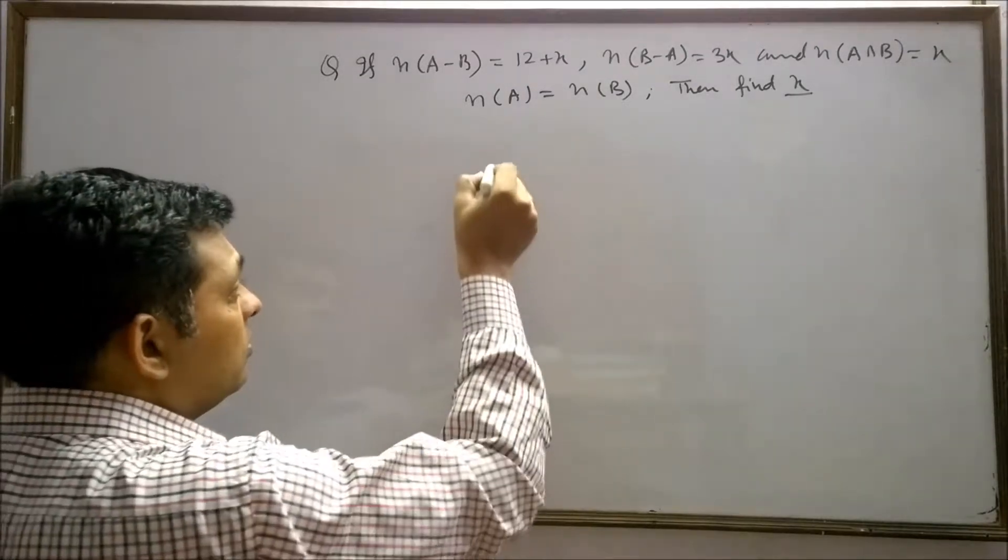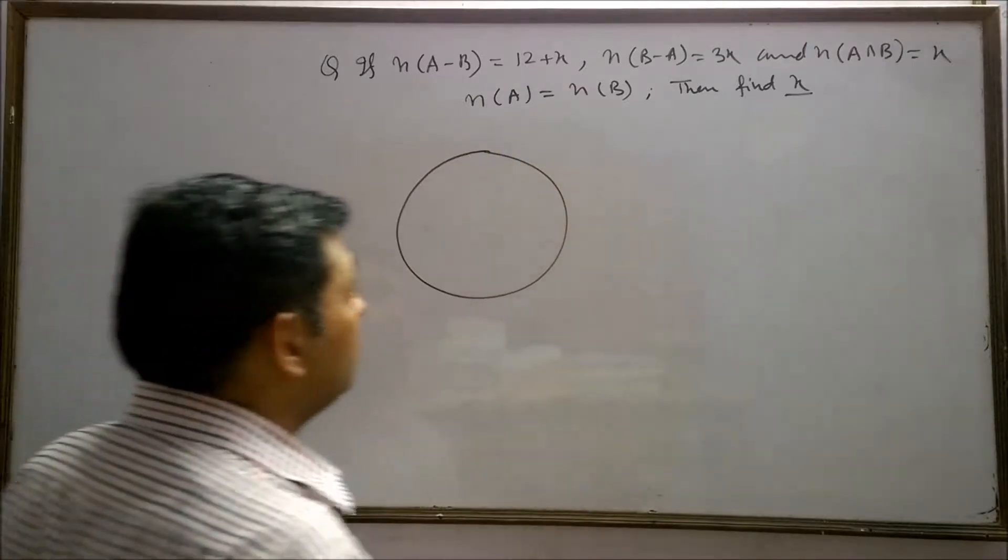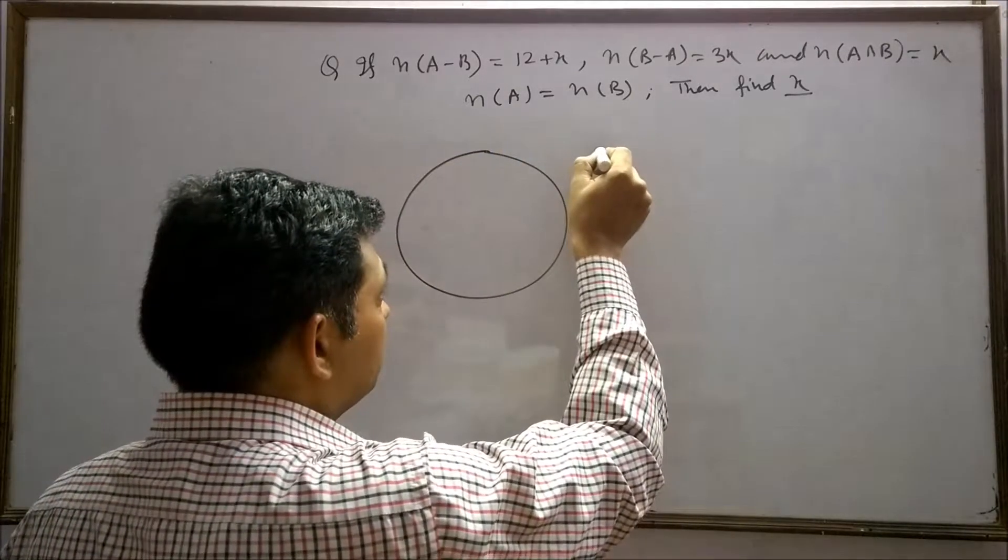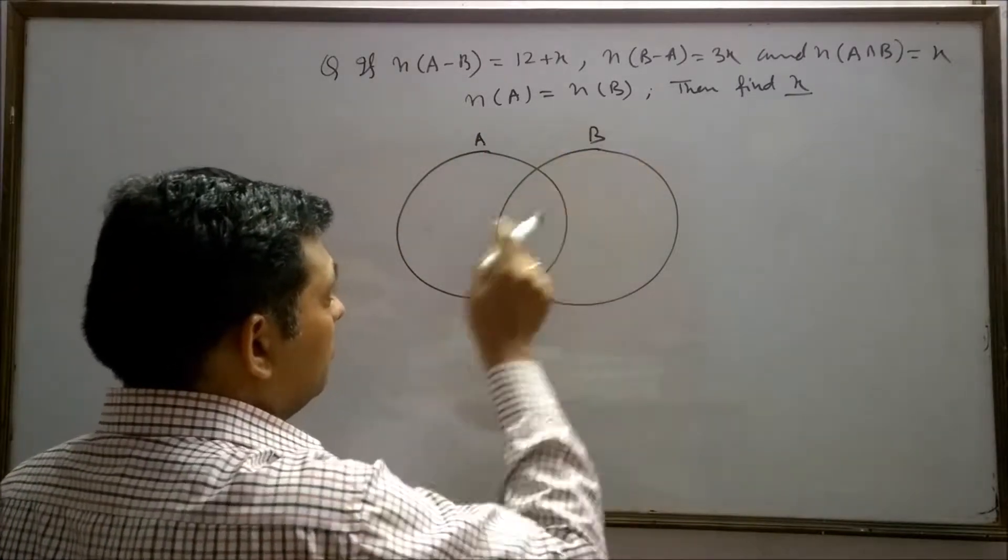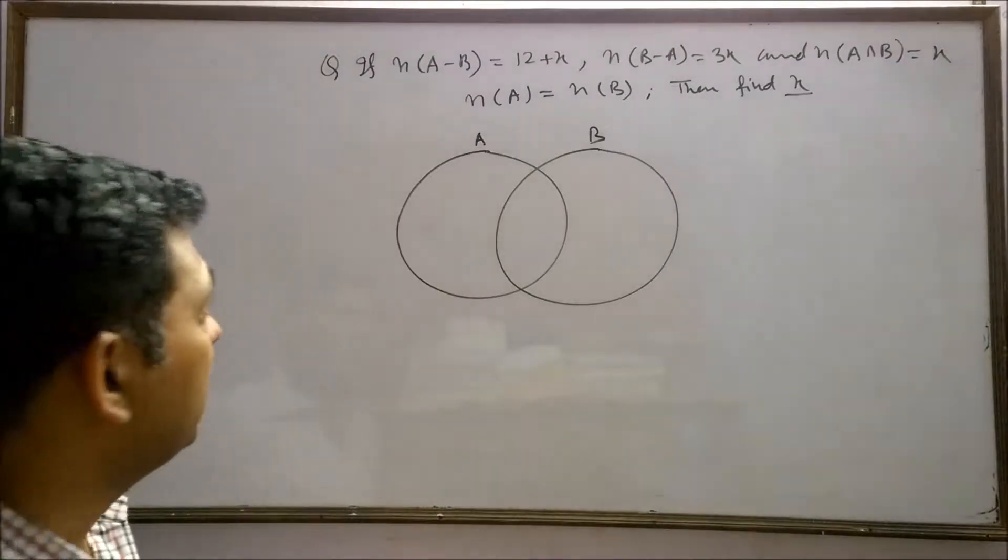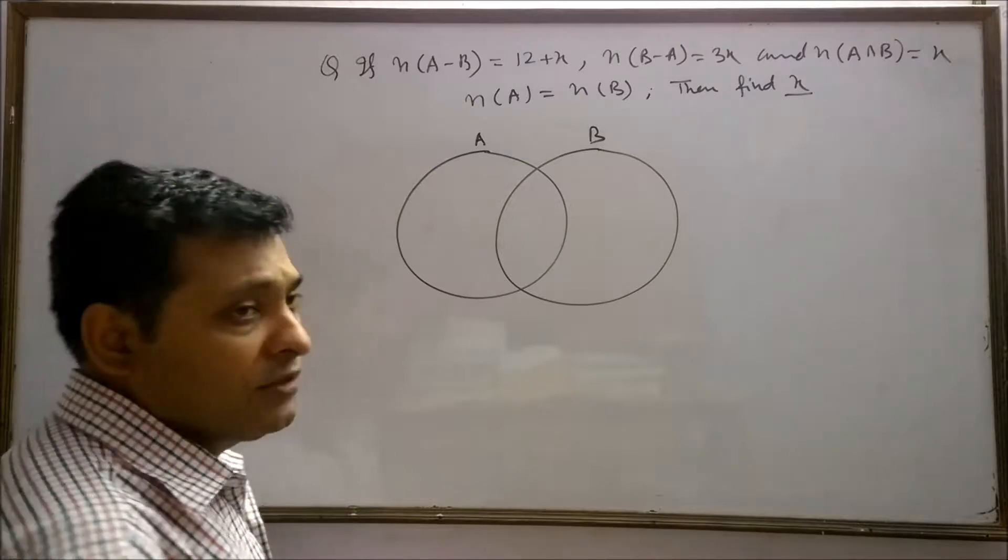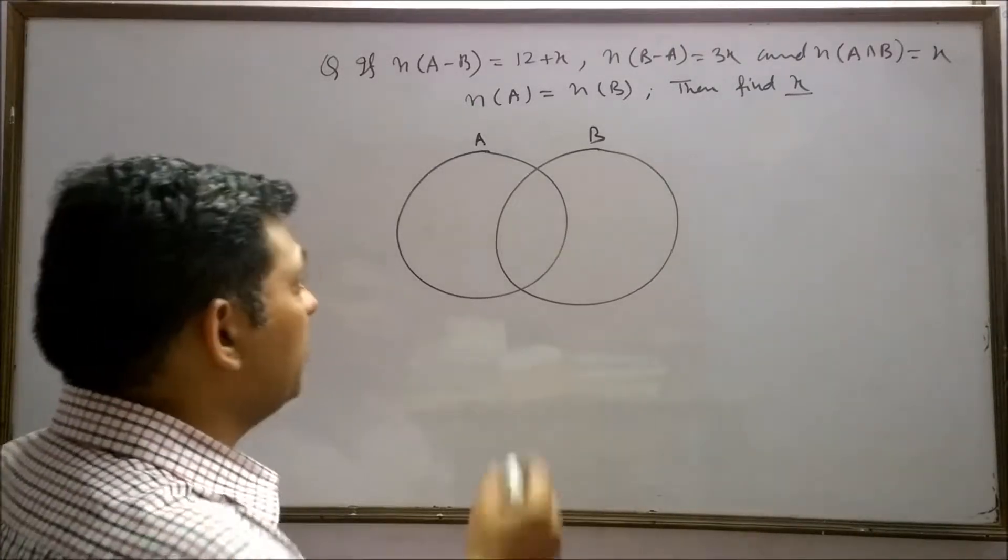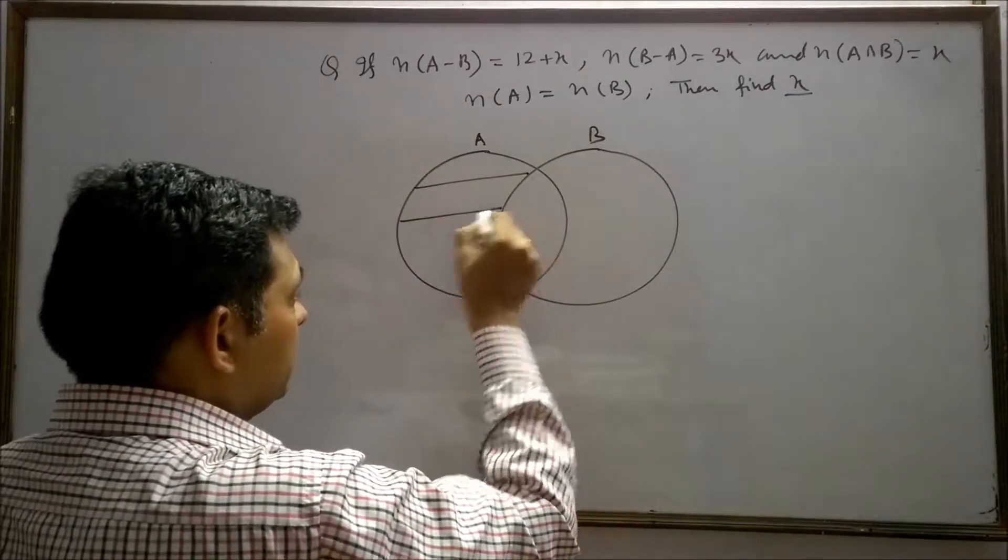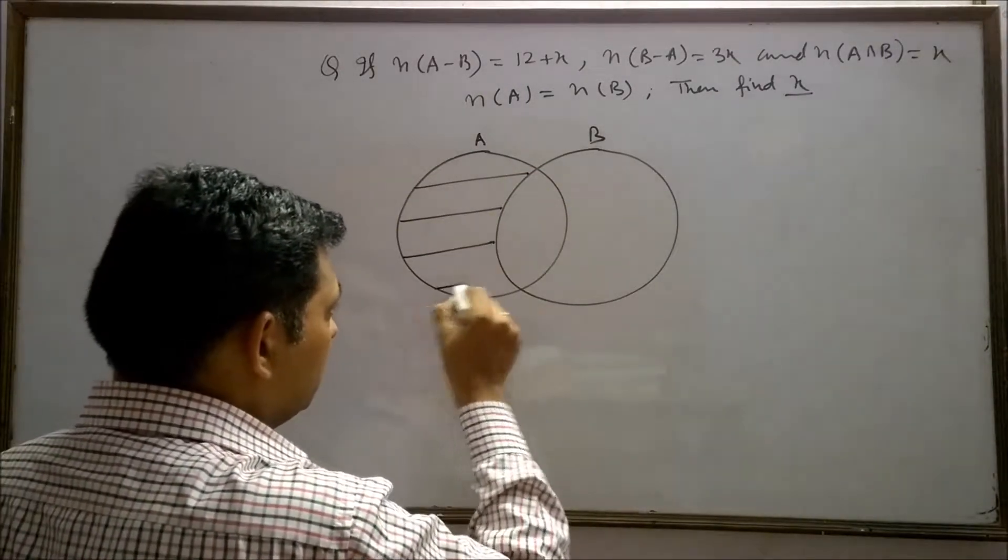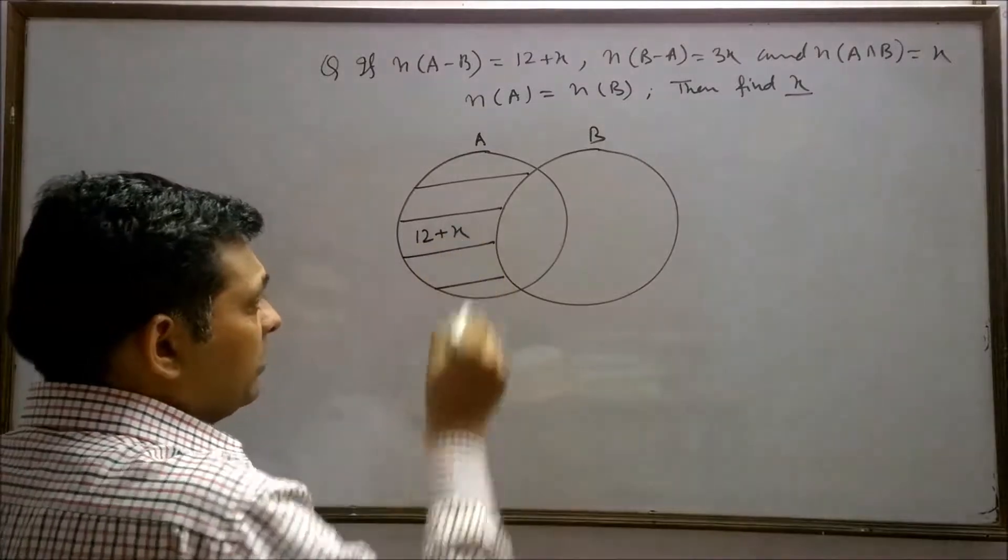First of all, I will draw the Venn diagram for this question. Let this is our set A. n(A-B) is equals to 12 plus x. n(A-B) is a set only A not B. It means only A is this part. This set contains 12 plus x element.